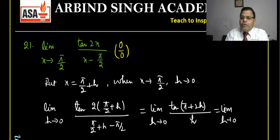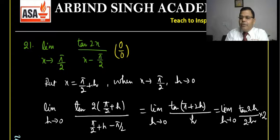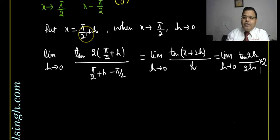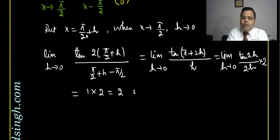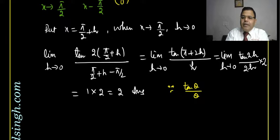Since tan(π + 2h) = tan(2h), we have limit h→0 of tan(2h)/h. Multiply and divide by 2: [tan(2h)/(2h)] × 2. Since tan(θ)/θ → 1 as θ → 0, this equals 1 × 2 = 2. That is the right-hand limit answer. Remember: lim(θ→0) tan(θ)/θ = 1.